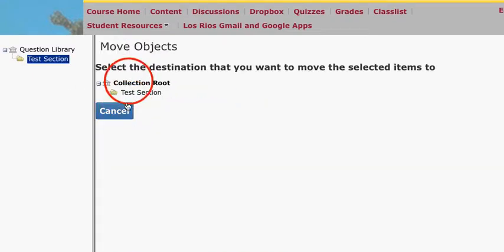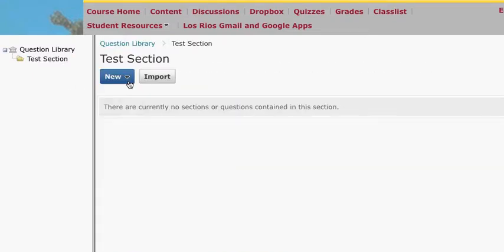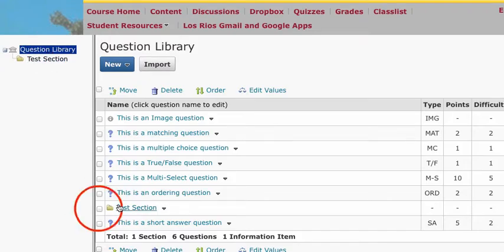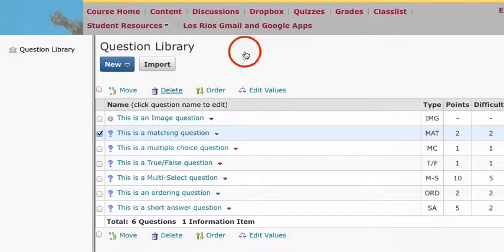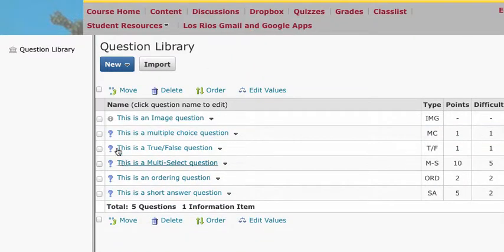Let's go ahead and move it back out to the root. If I want to delete this section, I would select it and click Delete. I can do the same to each question. That's how you delete and create new items in the question library.